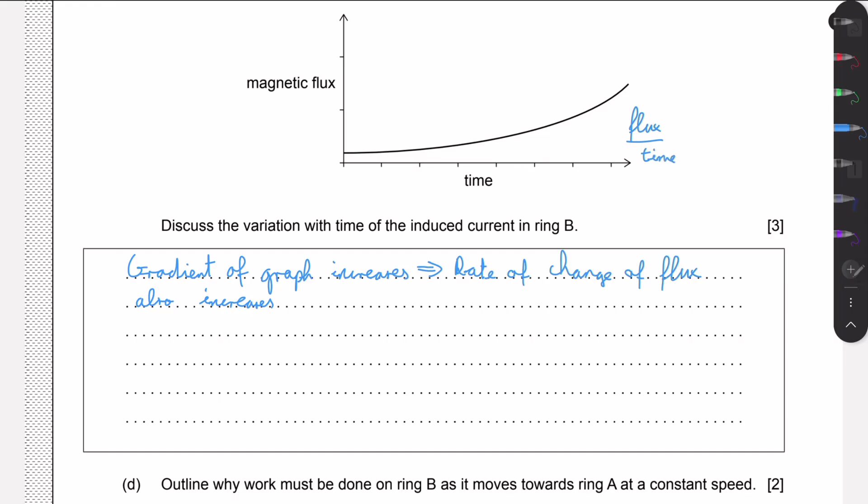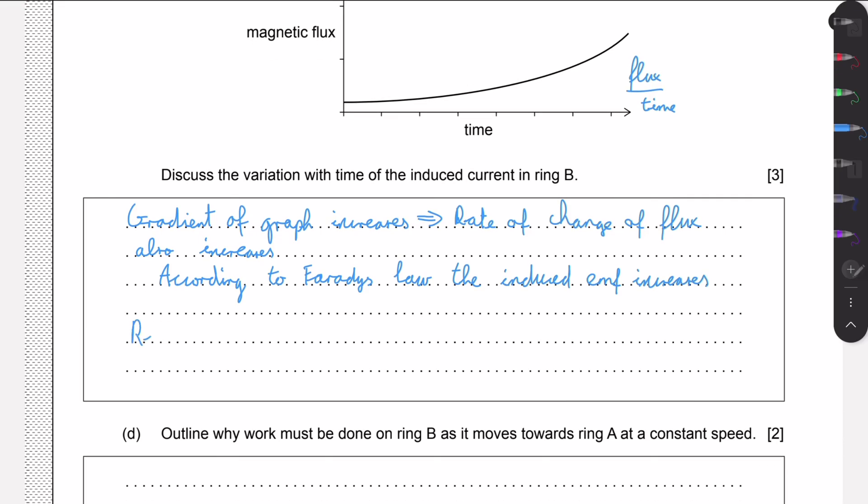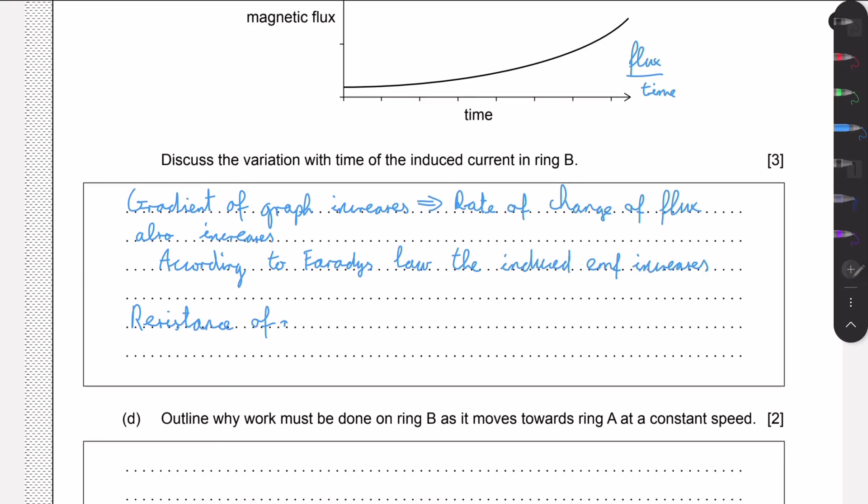As the slope is simply the magnetic flux on the y-axis divided by the x-axis, so that's flux over time, so that's the rate of change of flux. And according to Faraday's law, the induced EMF will also increase. As we know that the induced EMF is proportional to the rate of change of flux. So if our rate of change of flux is increasing, then our induced EMF must also increase.